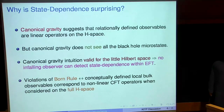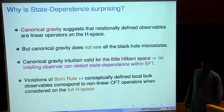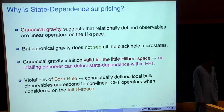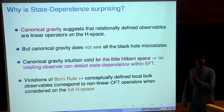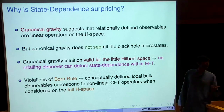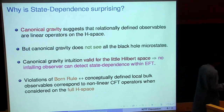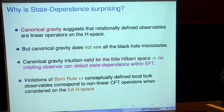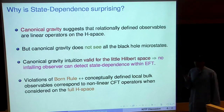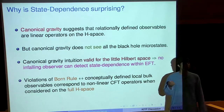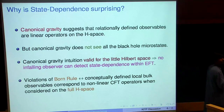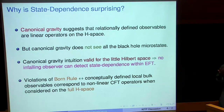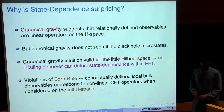Why is state dependence surprising — why would you expect things to be state independent? The best reason I know comes from canonical gravity, which tells you that if you're trying to quantize gravity and ask for relationally defined observables — like a metric at a point defined relationally with respect to the bulk — such an observable would be a linear operator on the entire Hilbert space. 'Relationally defined' means you start from the boundary, jump in for some time, framing things with respect to the boundary.